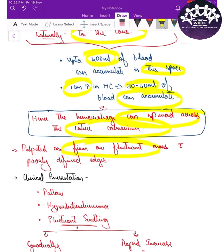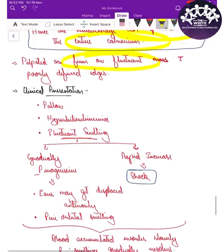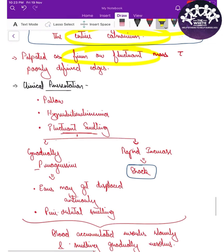On palpation, it can be felt as a firm or fluctuant mass with poorly defined edges. Because it is a diffuse swelling across the whole skull, it is very difficult to clearly delineate, but it is palpated as a fluctuant, boggy swelling with poorly defined edges.